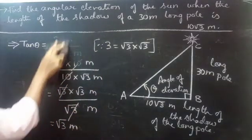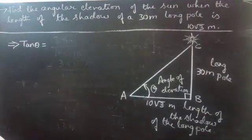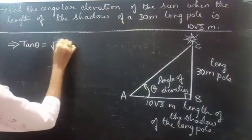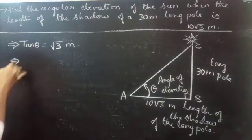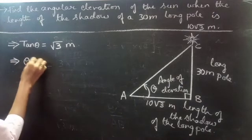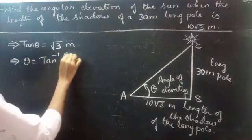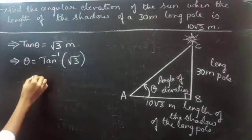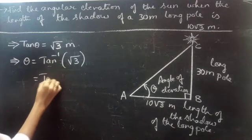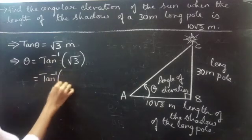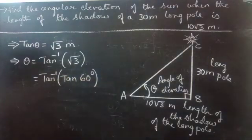So this implies tan theta equals to root 3. From this you can write theta equals to tan inverse of root 3, which is tan inverse of tan 60 degrees.